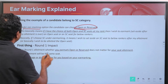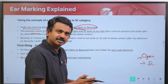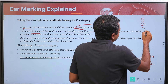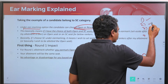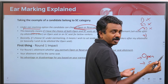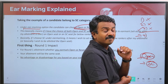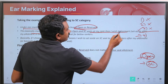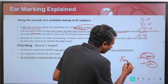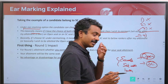Under ear marking, you will see open or reserved. This basically means: if I have the choice of both open and SC seats and I am being allotted a seat, say my fourth choice is available out of 40 choices, and both open and SC seats are available — which one should I earmark? Earmark means setting aside for lower rankers. I can decide which one to set aside for lower rankers.